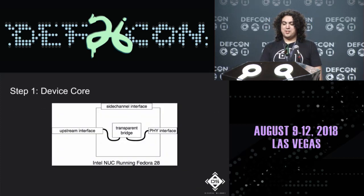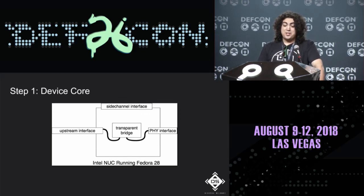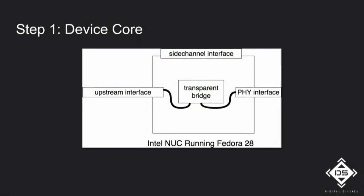To implement the attack, we need a rogue device with three interfaces: a side-channel interface for remote LTE access, an upstream interface connected to the switch port, and a PHY interface connected to the supplicant. The device itself is a mini computer — we use an Intel NUC running Fedora 28. We also need a way to divert traffic: physically using a mechanical A/B Ethernet splitter available on Amazon for about $10.